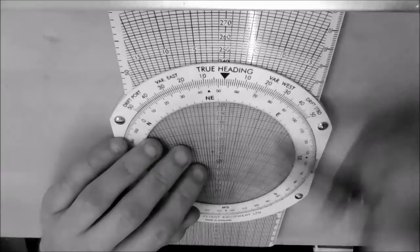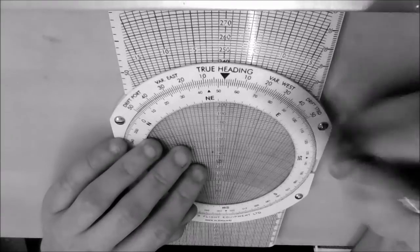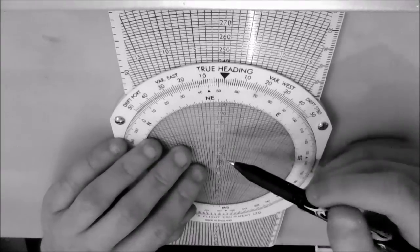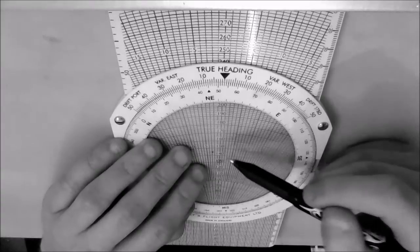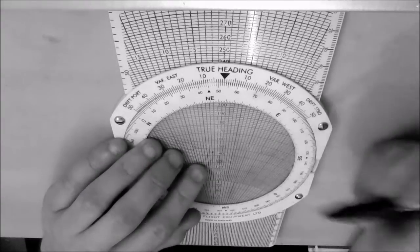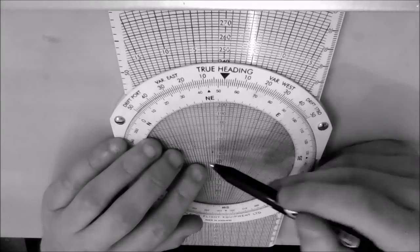Now to calculate our track from that, what we do is we take our true heading and we minus the 3 from that true heading. And we minus it because it's on the left; if it was on the right hand side we'd add it, but we don't because it's on the left we minus it.